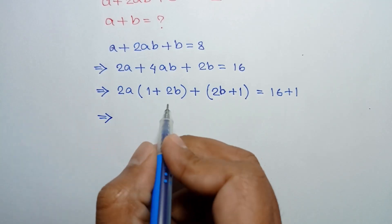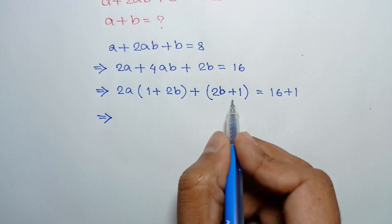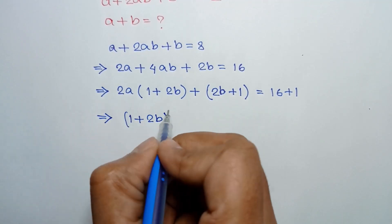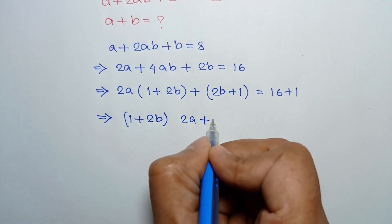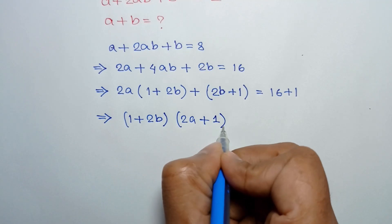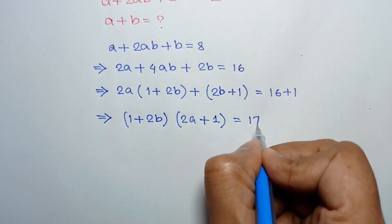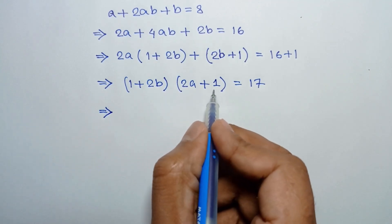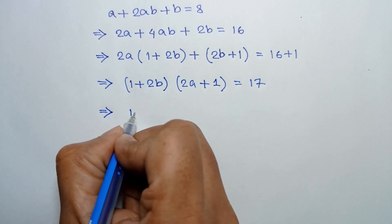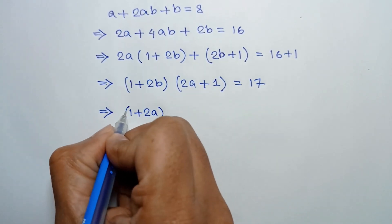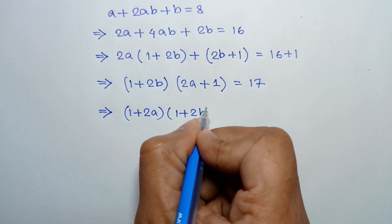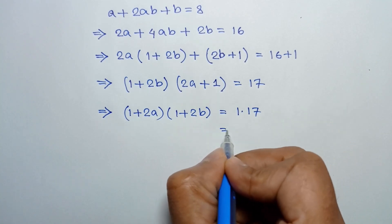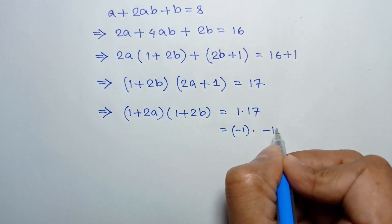Taking common 1 plus 2b from here, we can write 1 plus 2b times 2a plus 1 is equal to 16 plus 1 is 17. Rearranging, we can write 1 plus 2a times 1 plus 2b is equal to 17.